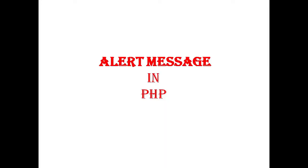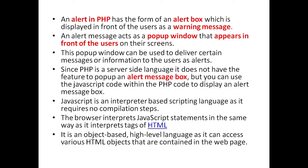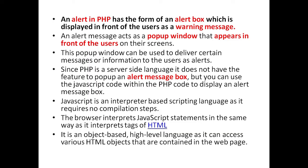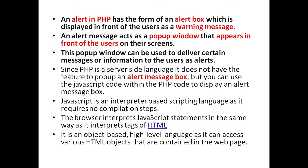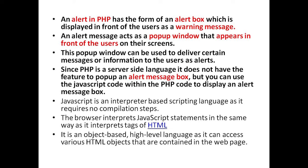Here we will see alert messages in PHP. An alert in PHP has the form of an alert box which is displayed in front of the users as a warning message. An alert message acts as a pop-up window that appears in front of the user on their screen, and can be used to deliver certain messages or information. Since PHP is a server-side language, it does not have the feature of a pop-up alert message box, but you can use JavaScript code within PHP code to display an alert message box.